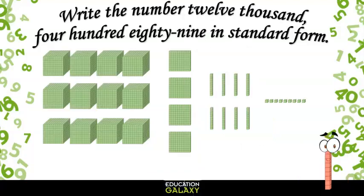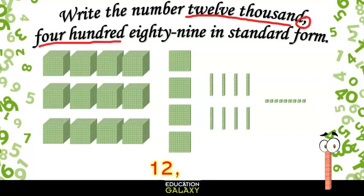Now let's look at how to write the number 12,489 in standard form. We have 12, and then for the word thousand, I write a comma, and then 489. There we go, 12,489.